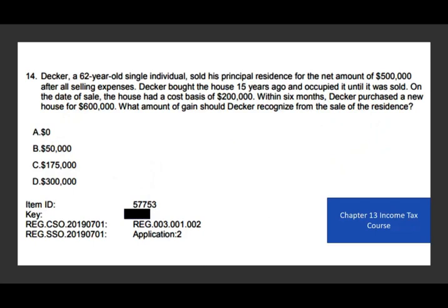Let's take a look at this question, also from Chapter 13. Decker, a 62-year-old single individual, sold his principal residence for a net amount of $500,000 after selling expenses. Decker bought the house 15 years ago and occupied it until it was sold. On the date of sale, the house had a cost basis of $200,000. Within six months, Decker purchased a new house for $600,000. What amount of gain should Decker recognize from the sale?